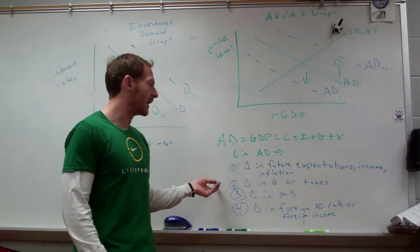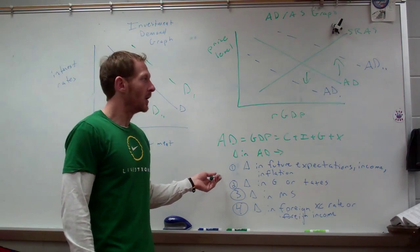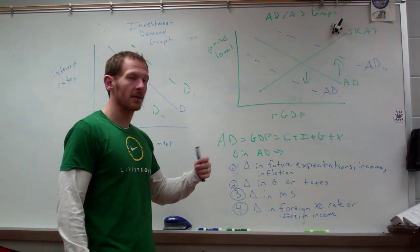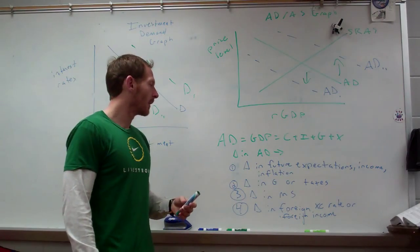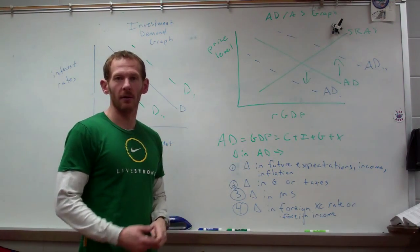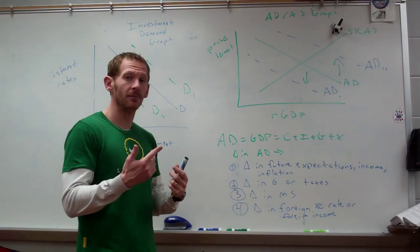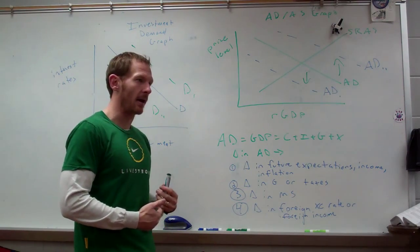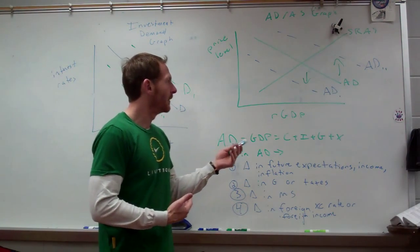If there is a change in government spending or taxes. So if G increases, then AD will increase. If taxes decrease, then AD will increase. If taxes go up, then AD will go down. If government spends less, then AD will go down.